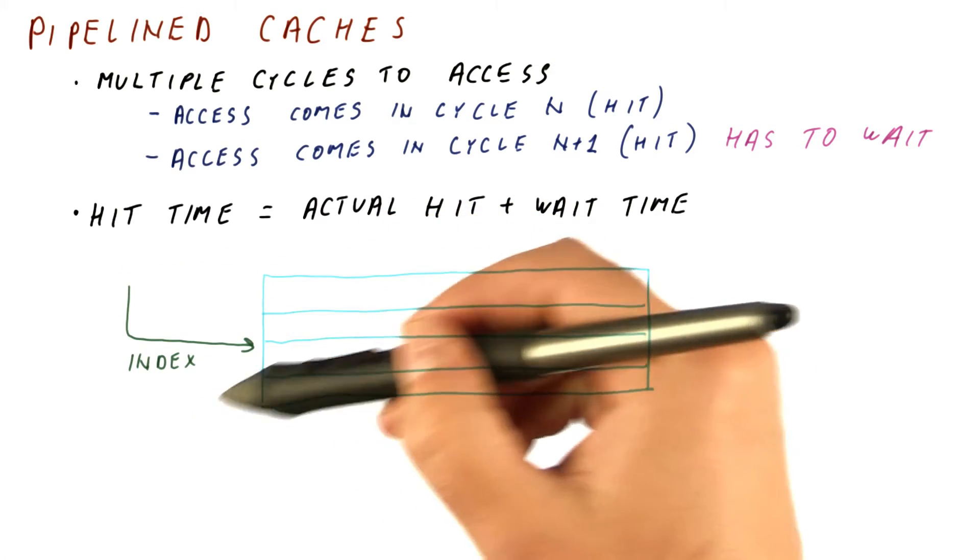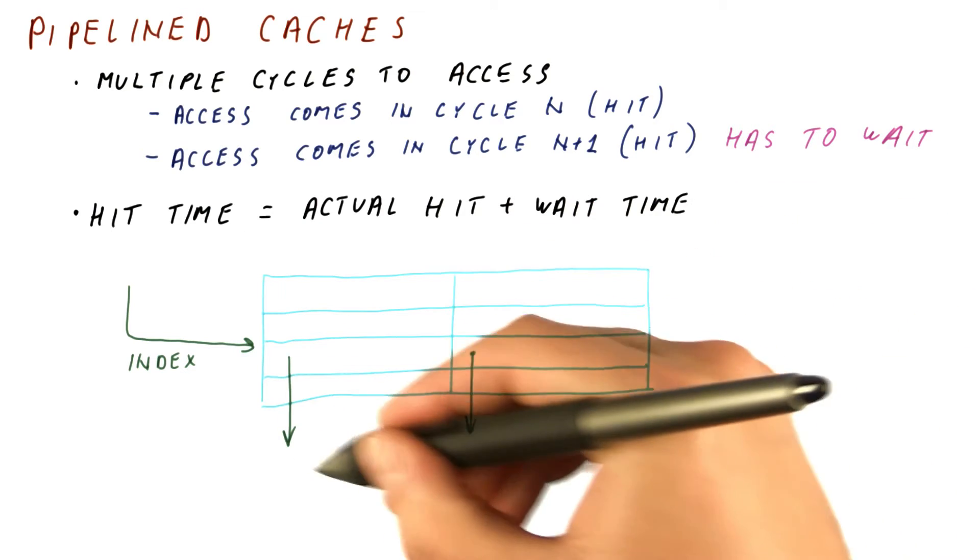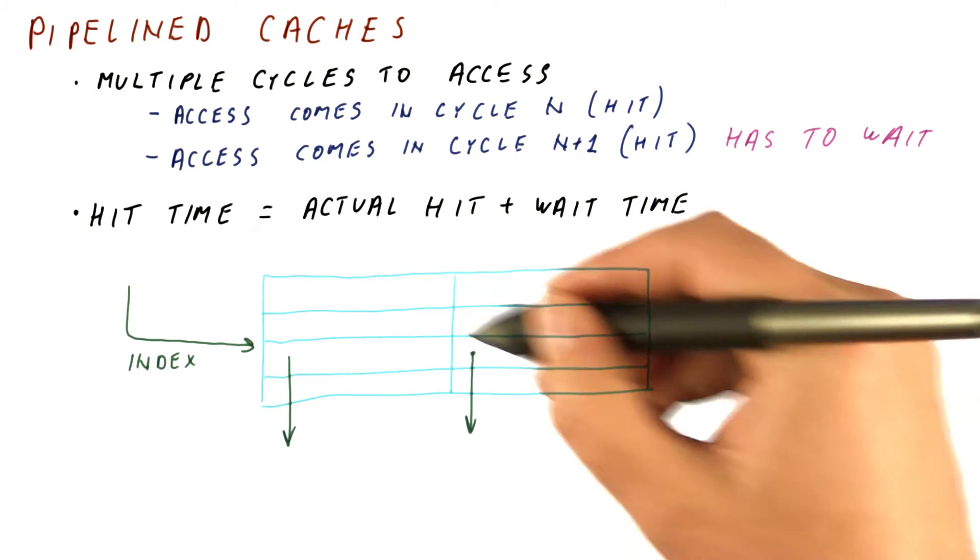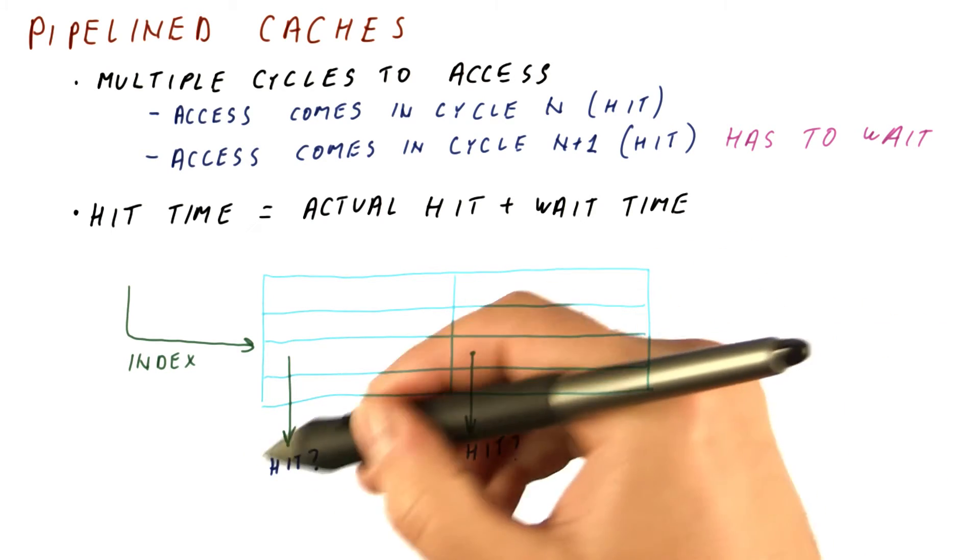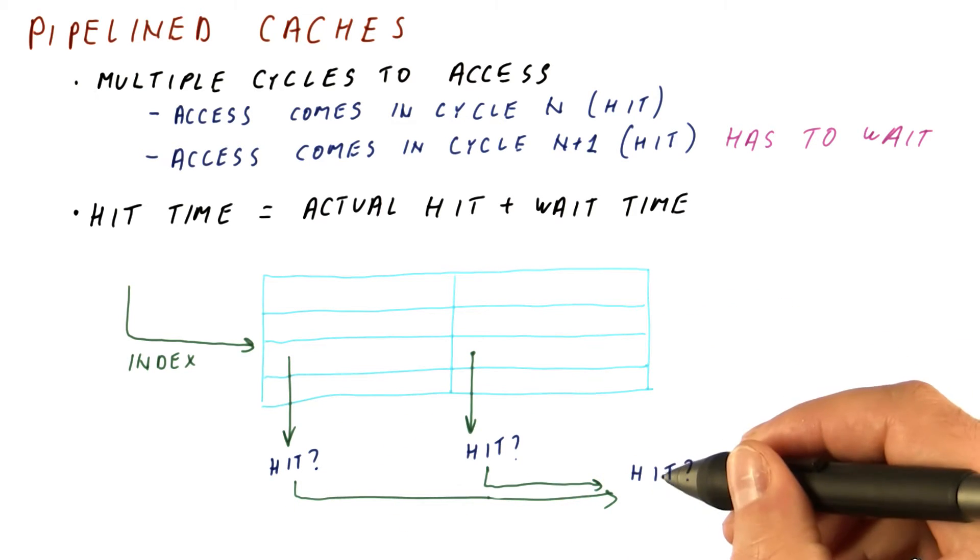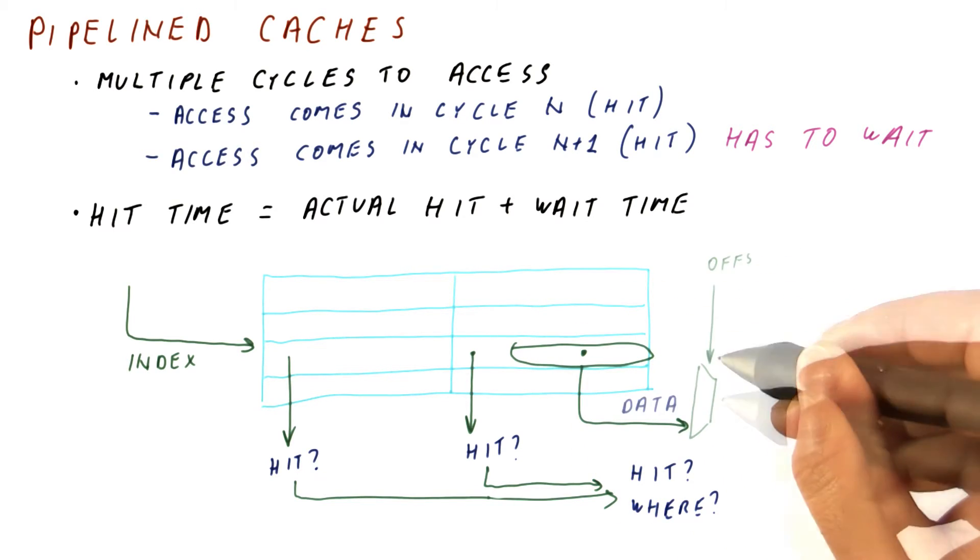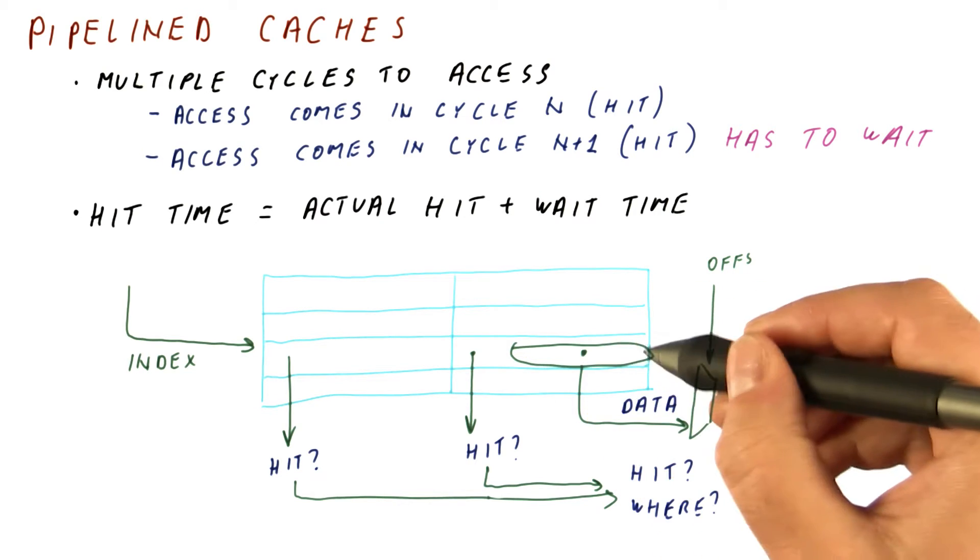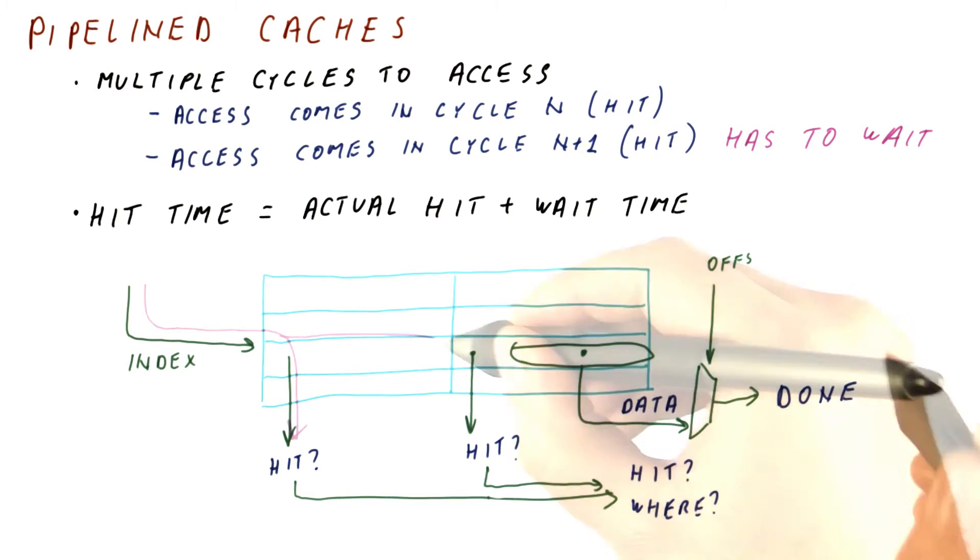Remember that the cache access consists of using the index part of the address to find the set, reading out the tags and valid bits that correspond to the blocks in that set, comparing the tags, and checking the valid bits for each of these to see whether it has a hit. Combining these so that we know whether we have an overall hit and where in our set. Once we know where, we read out the data and use the offset to choose the right part of the large cache block, at which point we have the data that the processor wants and our cache access is done.